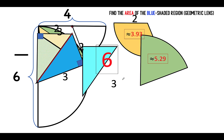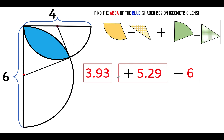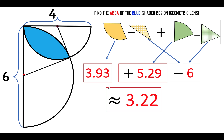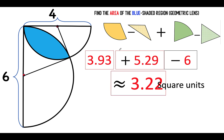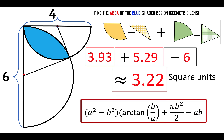Let's bring back the area of the kite that we computed previously, which is 6. We can now find the area of the blue shaded region: 3.93 (yellow sector) plus 5.29 (green sector) minus 6 (combined area of the two triangles, i.e., the kite) gives approximately 3.22 square units. If you generalize the process followed here, the formula for the area of this geometric lens is (a squared minus b squared) times the inverse tangent of b over a, plus pi b squared over 2, minus ab, where a and b are the radii of the two semicircles respectively.